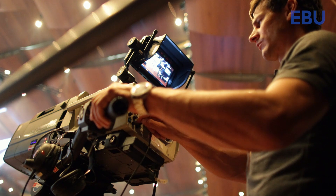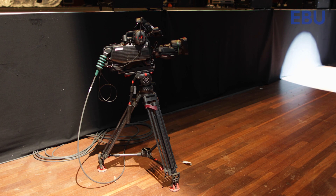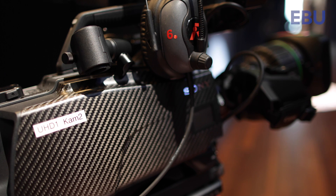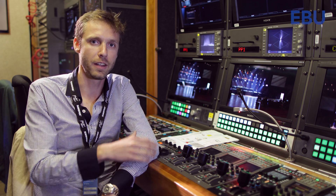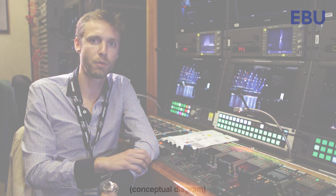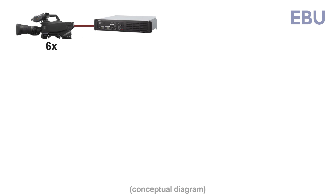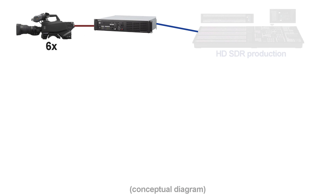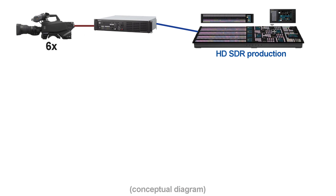To do that, we have cameras with double output — UHD and HD. The cameras acquire a huge dynamic range, and then the CCU will process these signals into two different outputs: one which is HD-SDR and will go into the normal production, and the second one which is 4K HDR.